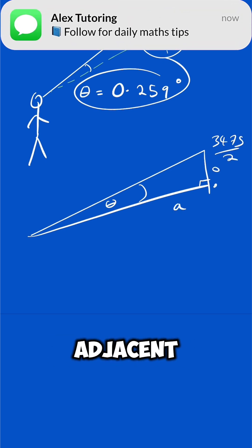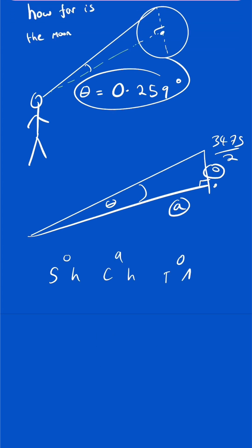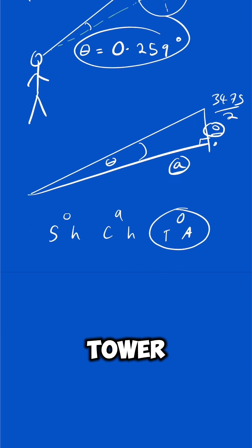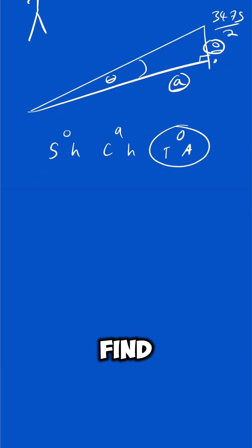Opposite, adjacent. Therefore do we use SOH CAH TOA? Well we have the adjacent and the opposite, we're interested in the angle, so we're going to use TOA and we are trying to find the adjacent. Bear in mind that's the angle these sides we're interested in.